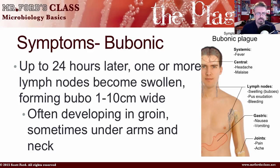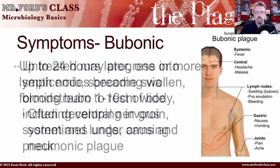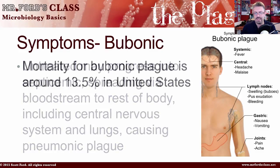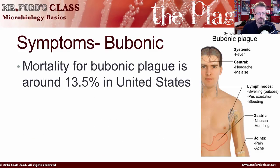There is a link in the description to the FAS.org site, which provides fact sheets about the plague for more information. If untreated, bubonic plague may progress into septicemic form, spreading via the bloodstream to the rest of the body, including the central nervous system — never a good place for a disease to go — where it can cause meningitis, and to the lungs, causing pneumonic plague. The mortality rate for bubonic plague is around 13.5% in the United States.